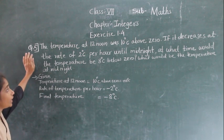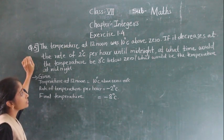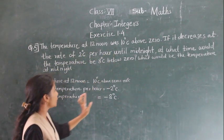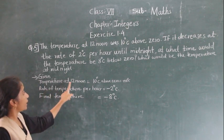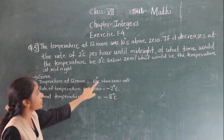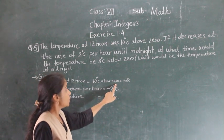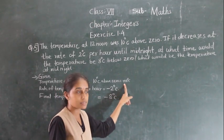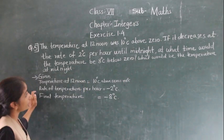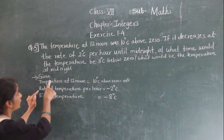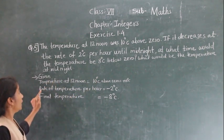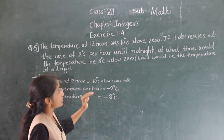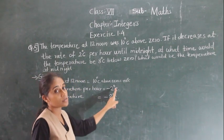Let's go to question number 5. The temperature at 12 noon is 10 degrees Celsius above 0, so plus 10 degrees Celsius. It decreases at the rate of 2 degrees Celsius per hour — that means minus 2 degrees Celsius per hour.